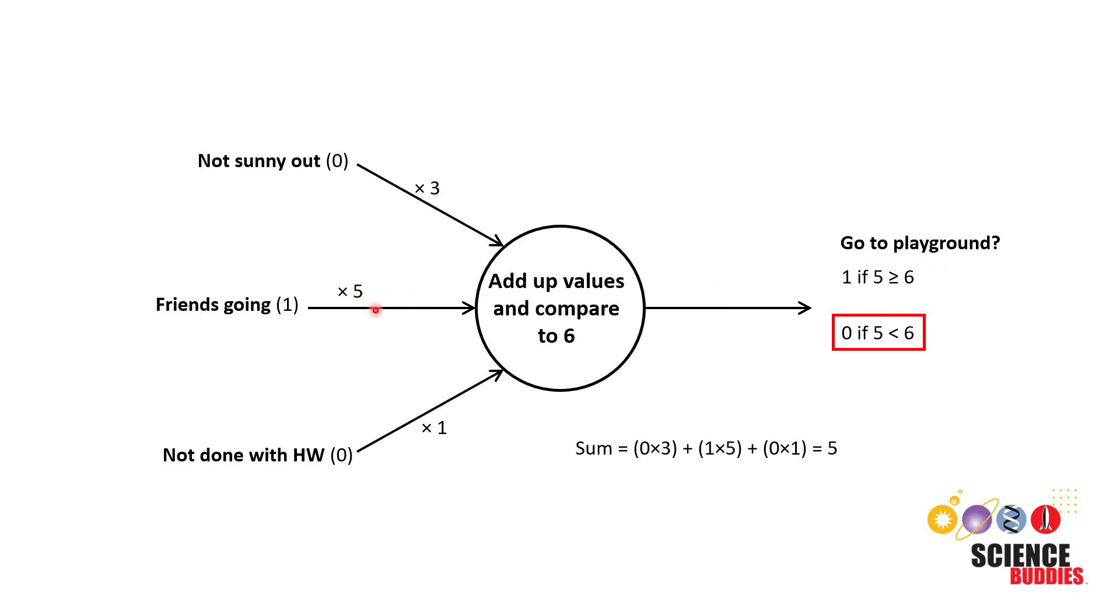And you could look at this and maybe notice that there are two different ways you could do that. One would be to lower the threshold so your output of five would be greater than or equal to the threshold, or you could increase the weight for your friends. In other words, you make seeing your friends more important, so in this case you would increase the sum which would then be greater than or equal to the fixed threshold. To keep our example simple, we are not going to change two things at once—we are going to leave the threshold at six but increase the weight for our friends to seven. We then see that when we redo the math, the new sum of our inputs times their weights is seven, so if we compare that to our threshold, seven is greater than or equal to six, so the output is one—we should go to the playground.